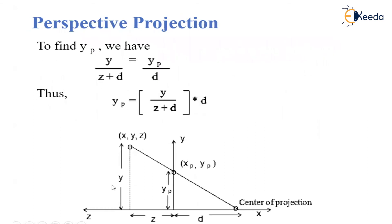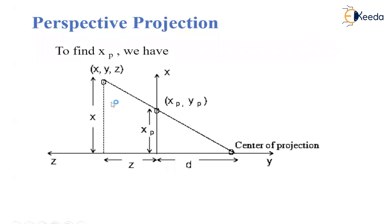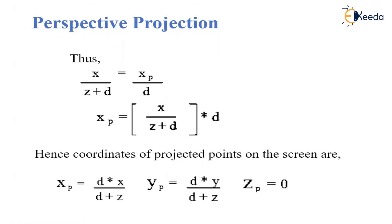To find YP, we write the equation: Y / (Z + D) = YP / D. From this equation, we get the value of YP. To find XP: X / (Z + D) = XP / D. In this way, we find out the value of XP.